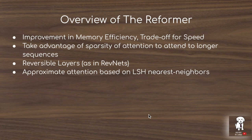Improvements in the Reformer compared to the standard transformer include better memory efficiency, reducing memory from order L² — required for the query times transposed key matrix — down to order L log L via the LSH attention mechanism, while also reducing the memory needed to store intermediate activations using reversible layers. This increases memory efficiency but trades off against computation speed.